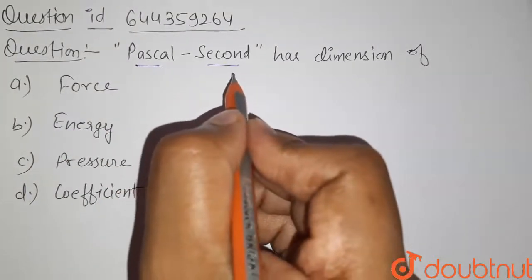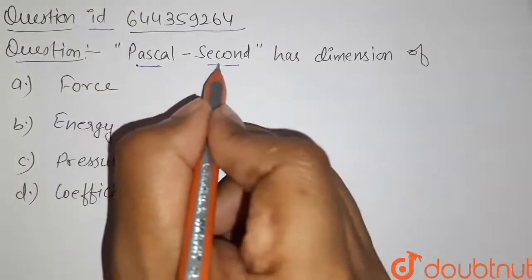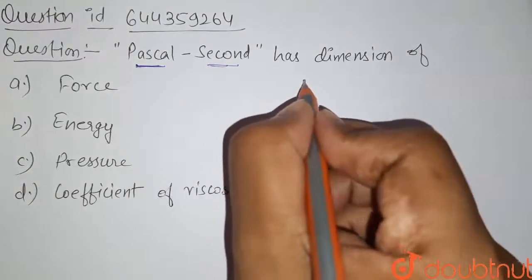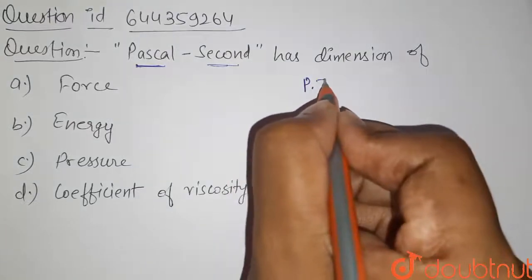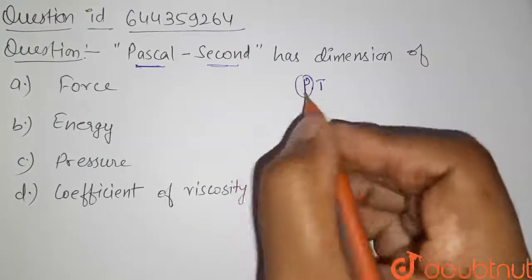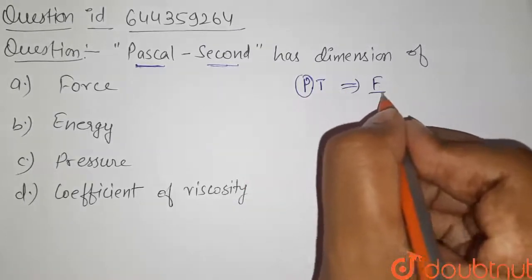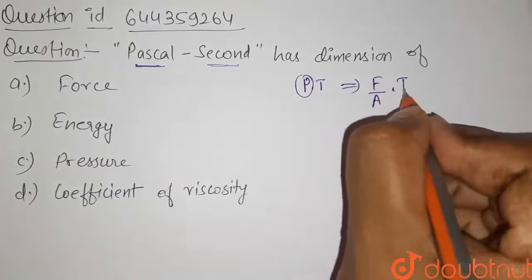So first of all we will find the dimension of Pascal-second. Pascal is the unit of pressure, okay, so it is pressure into time. The dimension for pressure can be found by using the formula that pressure equals force upon area into time.